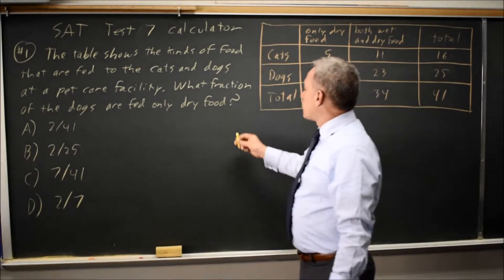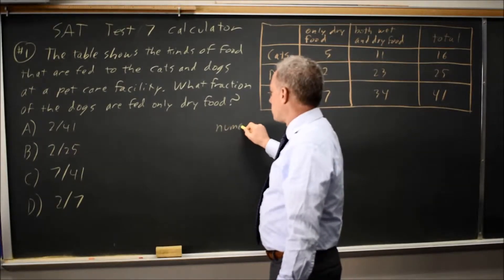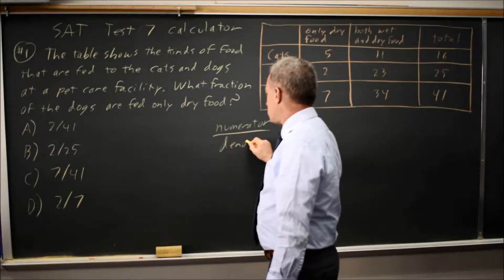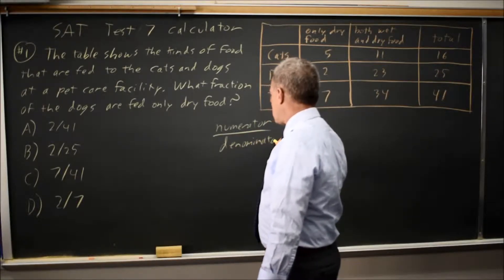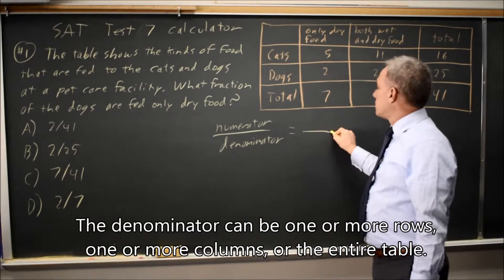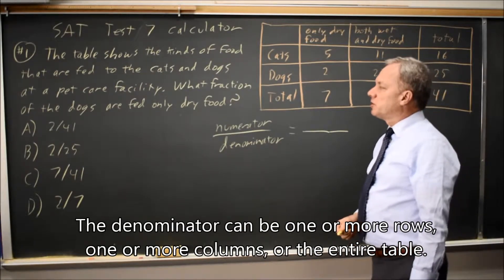As always, I want to find a fraction numerator over denominator. The denominator is based on the words of the question, what are all the individuals that could be chosen?